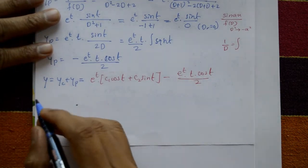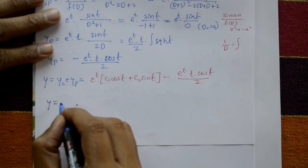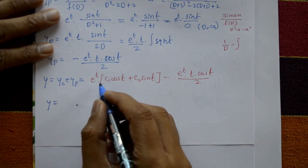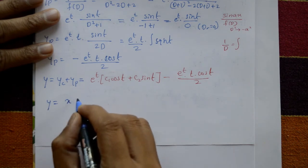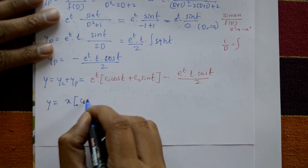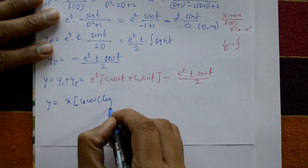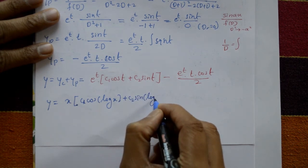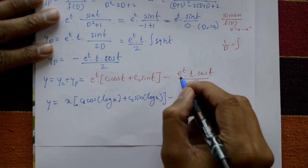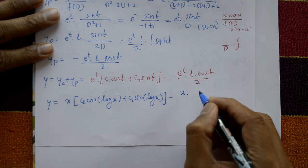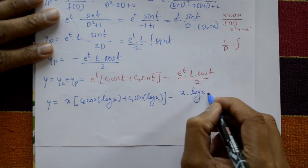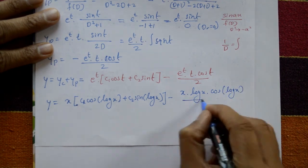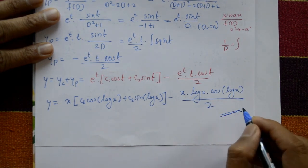Substituting t = log x and e^t = x, the solution in terms of x is: y = x(c₁ cos(log x) + c₂ sin(log x)) − x · log x · cos(log x) / 2. This is the required solution.